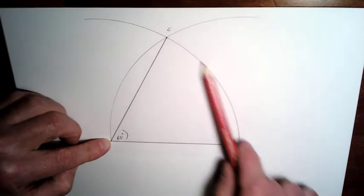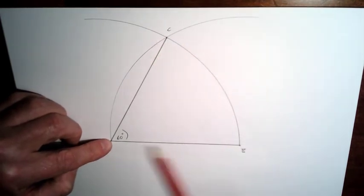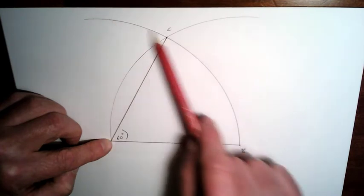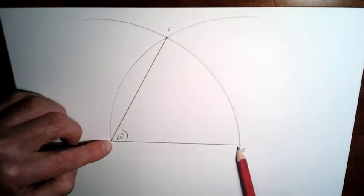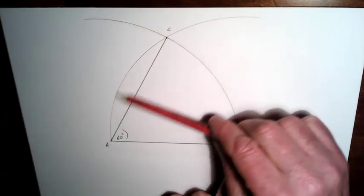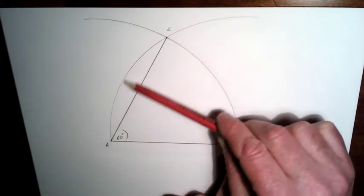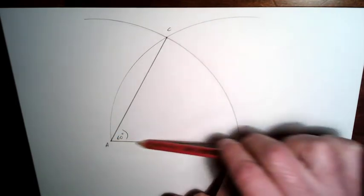You've drawn this arc here, every distance along here, every point along here is that distance. And similarly with this one here, every distance along this arc here is going to be this distance here.